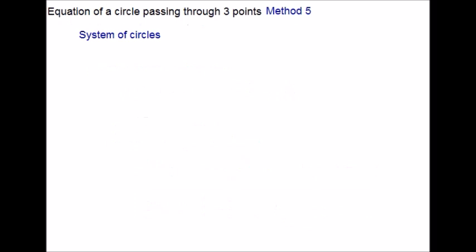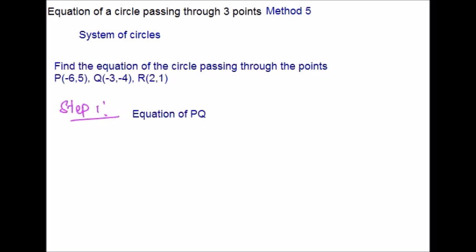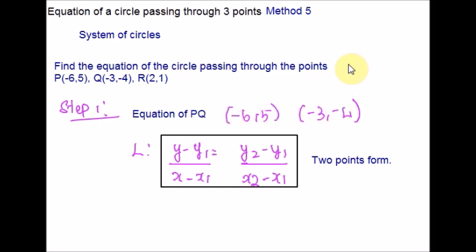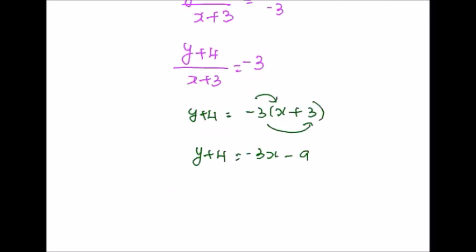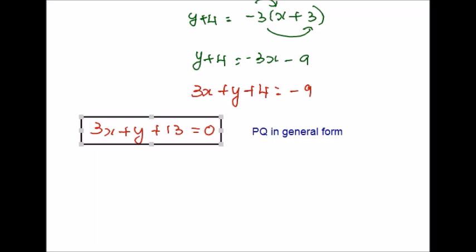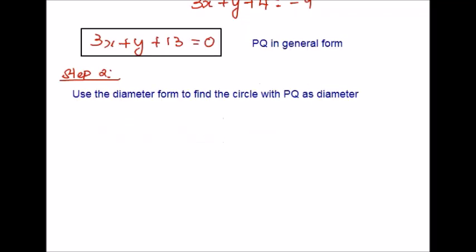In Method 5 we will use the system of circles. We will also use the diameter form of the circle, but the key idea is working with the system of circles that must pass through points P and Q. Using the same example question, let's first find the equation of line PQ using the two-point formula, plugging in P and Q values and doing cross multiplication to write PQ in general form.